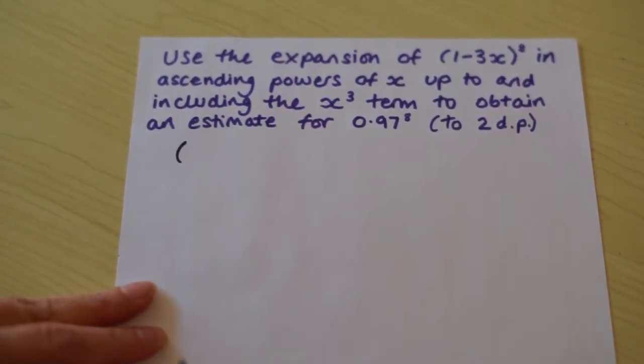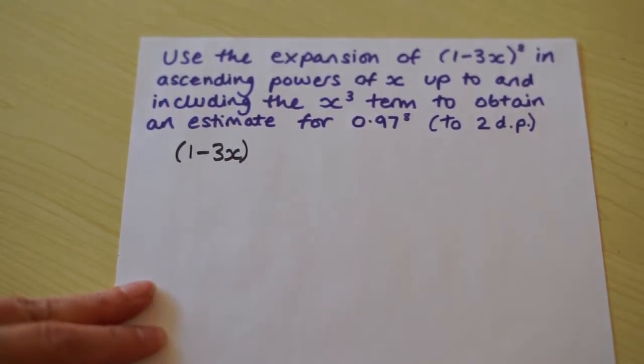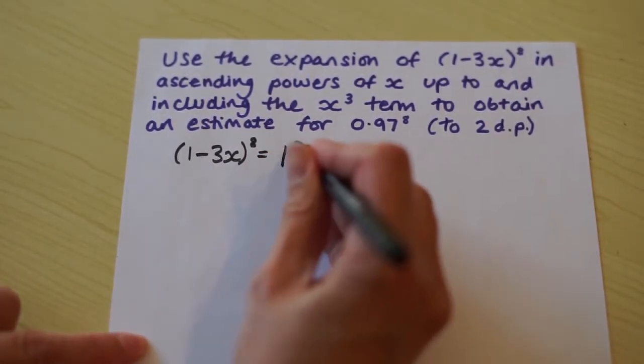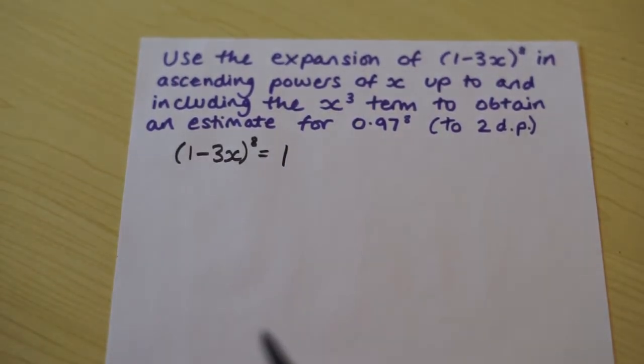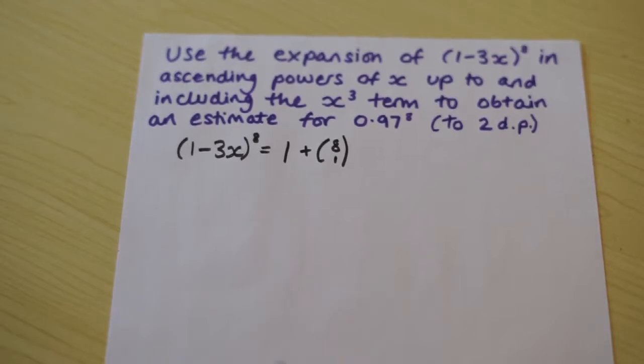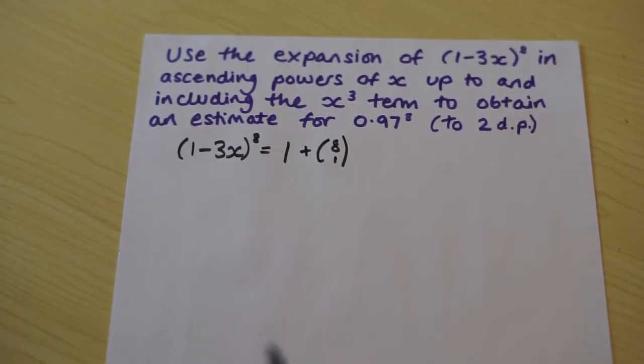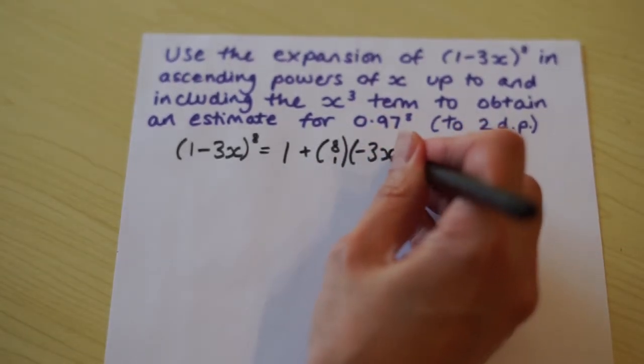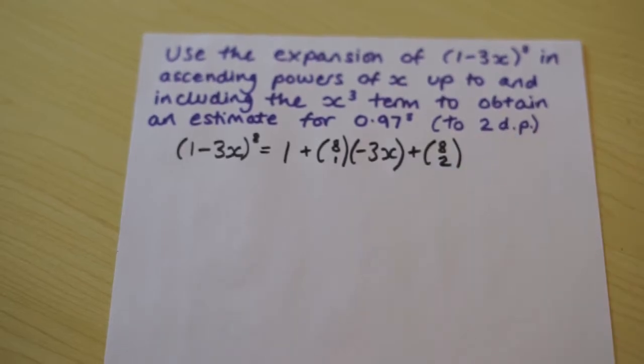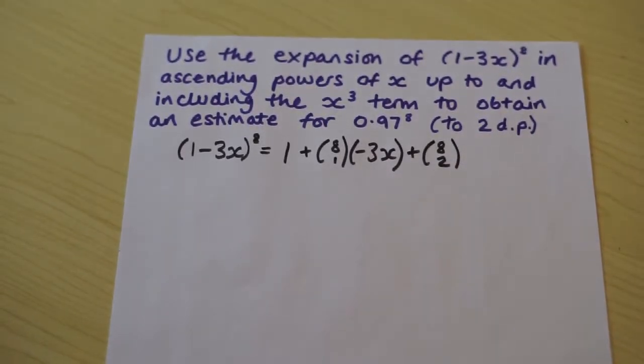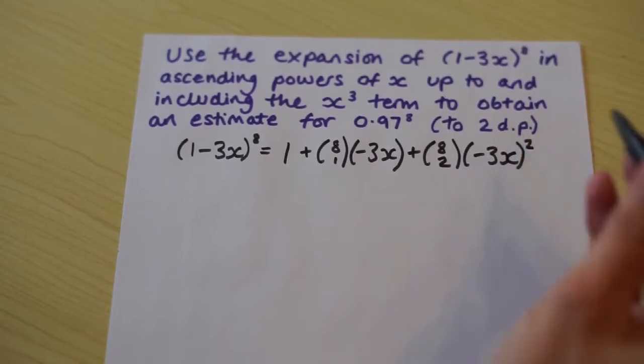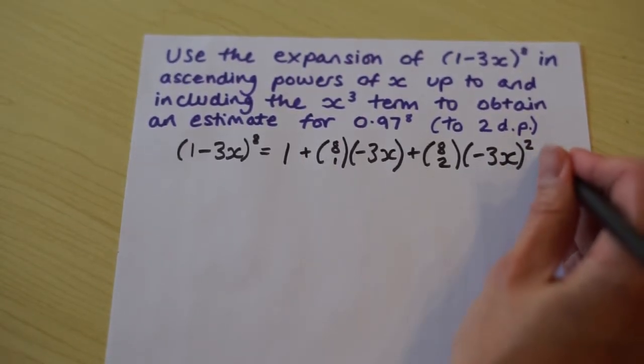Okay, so the bracket that we are going to be expanding. Okay, so the a term to the power 8, 1 to the power 8, we don't need to write that, that's just 1. 8 choose 1, 1 to the power 7 is just 1, we don't need to write that. The b term. 8 choose 2, the a term is 1 to the power 6, it's just 1, we don't need to write that. And the b term.